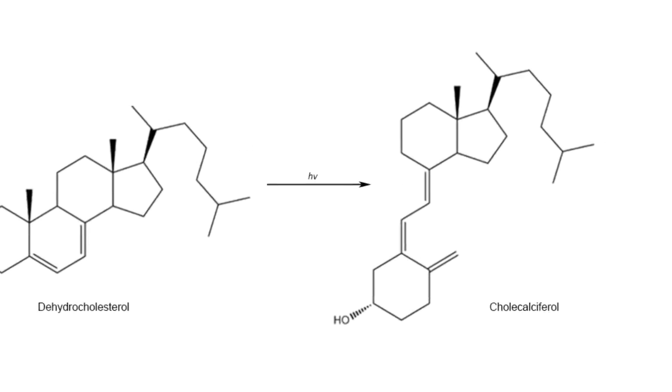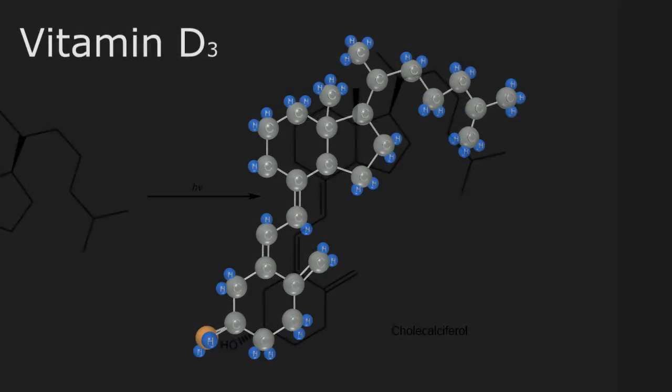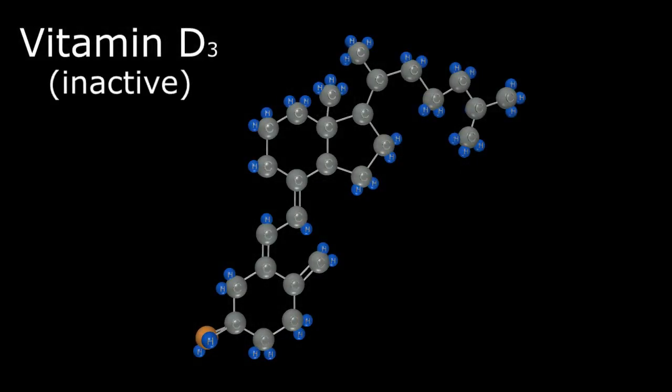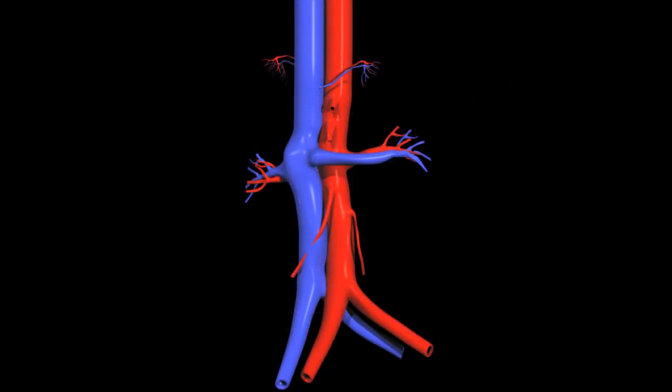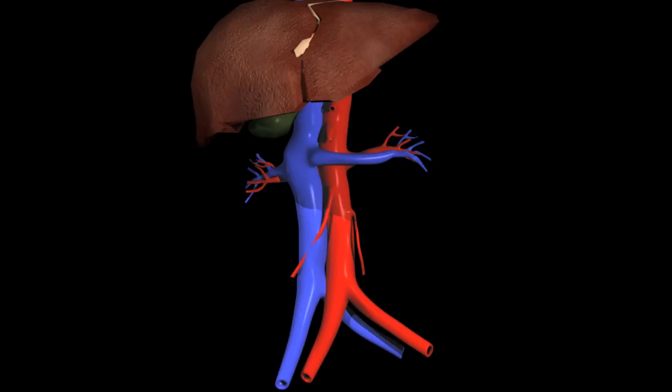Although the new molecule is called vitamin D3, this is not yet the active form of vitamin D. The molecule has to undergo further revisions in both the liver and kidneys. At this point, vitamin D3 is transported through the bloodstream and brought to the liver where it undergoes its first revision.